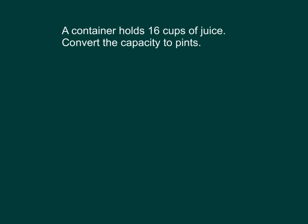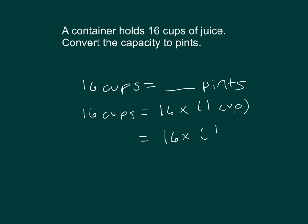A container holds 16 cups of juice. Convert the capacity to pints. I'll write it out as 16 cups equaling blank pints. I know that there are 2 cups in a pint. Write out our first line here: 16 cups equals 16 times 1 cup. So that 1 cup is equal to 1/2 of a pint.